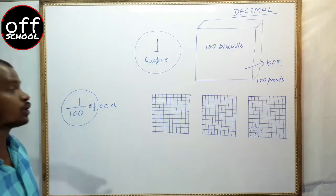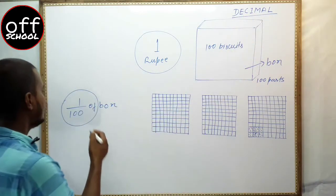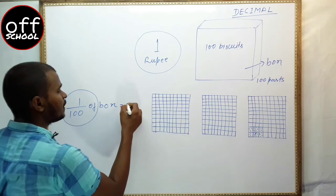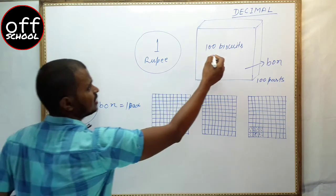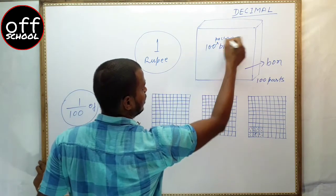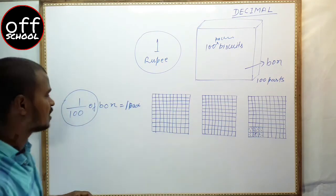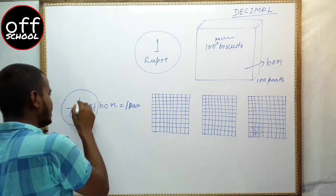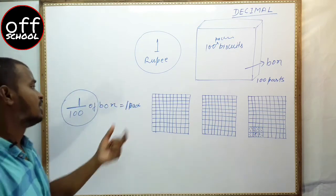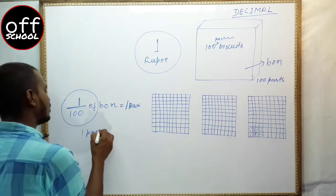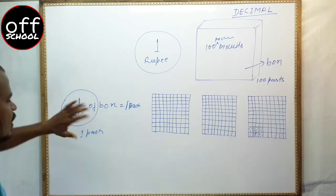In terms of biscuits, if there are 100 biscuits, 1 by 100 of the box means one biscuit. If we're talking about packets — there were 100 packets, so 1 by 100 of the box equals one packet. Because there were 100 in one box, in fraction form you would write 1 by 100 box, and in terms of biscuits you would say one packet. This is the fraction representation.